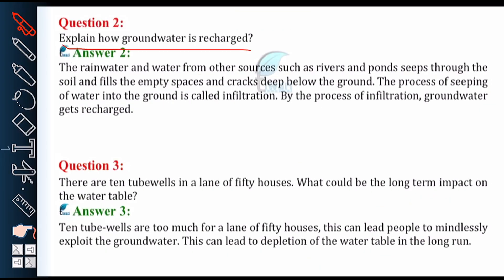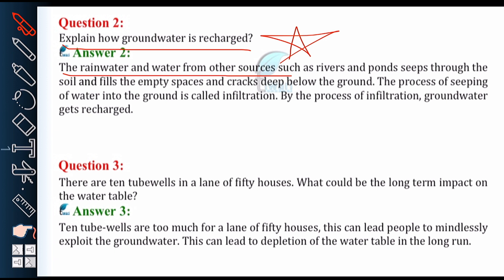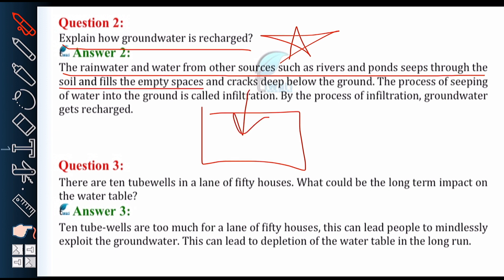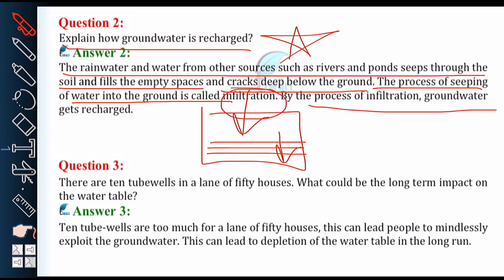Next is question number 2, and it is very important: explain how ground water is recharged. The rain water and water from other sources such as rivers and ponds seeps through the soil and fills the empty spaces and cracks deep below the ground. The process of seeping of water into the ground is called infiltration, and by the process of infiltration, ground water gets recharged.